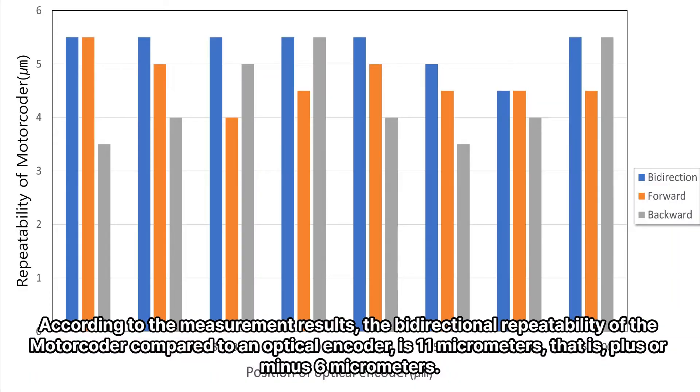According to the measurement results, the bi-directional repeatability of the motor coder compared to an optical encoder is 11 micrometers, that is, plus or minus 6 micrometers.